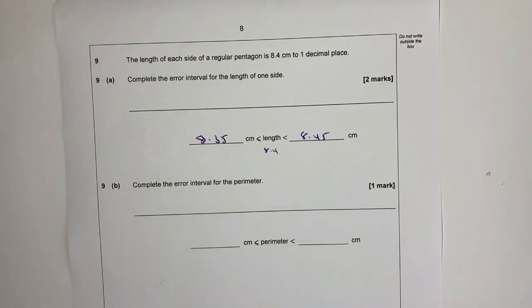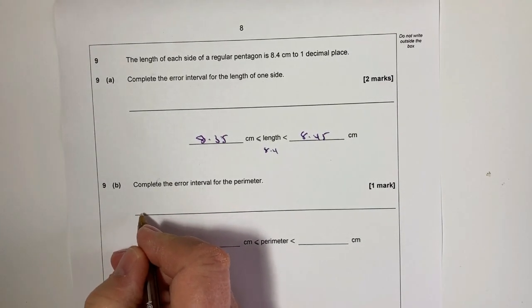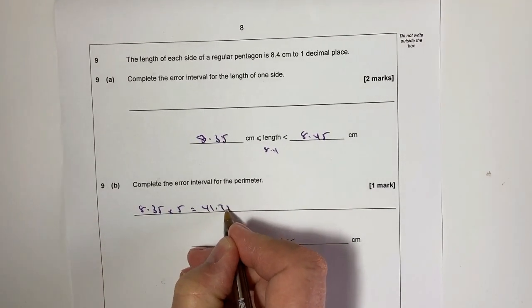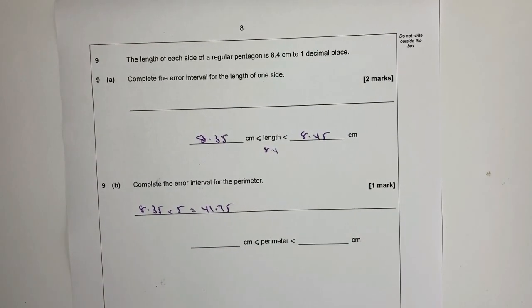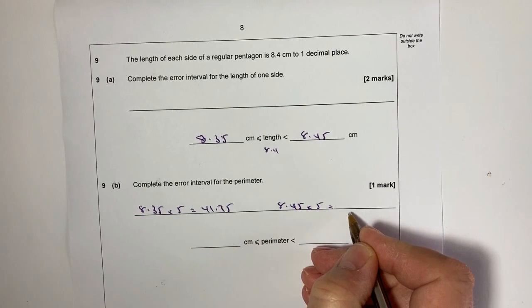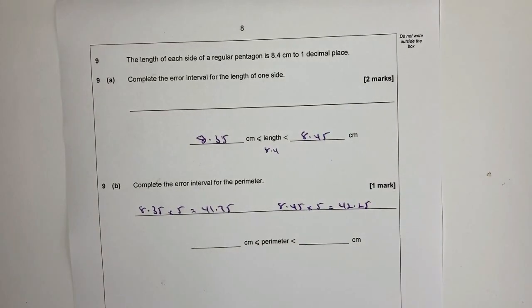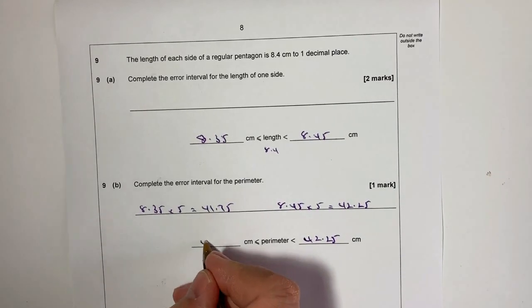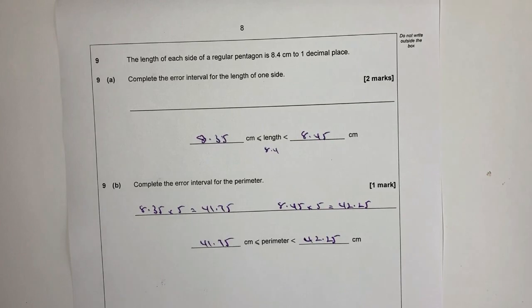So complete the error interval for the perimeter. Let's look at what we call the lower bound. The lower bound, bearing in mind it's a pentagon so it's got five sides, if each of them is 8.35, it means we're going to get 41.75 as the absolute minimum it can be. The maximum would be 8.45 times five again, and that's going to be 42.25, but remember it has to be less than that. So it's less than 42.25 and greater or equal to 41.75. Bounds are very important. We do use bounds an awful lot in engineering, so it's well worthwhile getting to grips with that if you're planning on studying engineering or science related courses in the future.